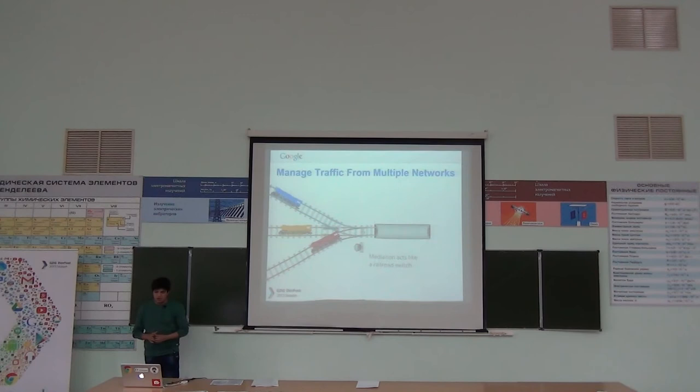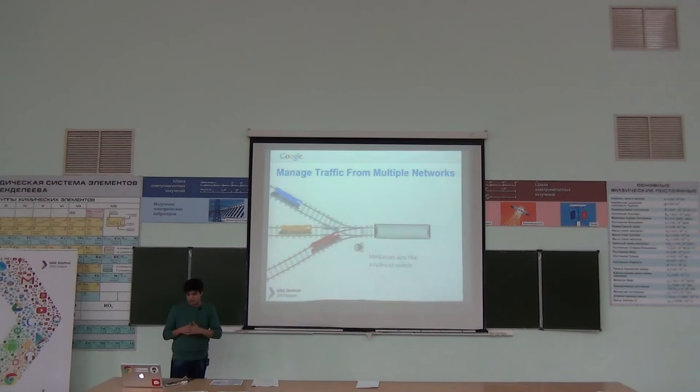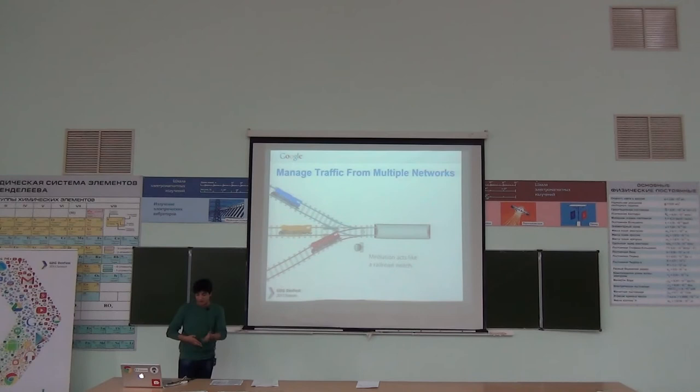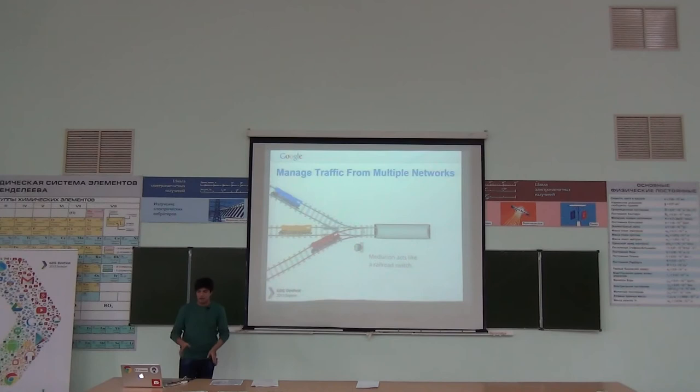The railroad switch here represents the eCPM value you have set. If you set an eCPM value, and the red train says its eCPM is higher, it is allowed. If the blue train says it's higher than yellow and higher than red, it is allowed and red is stopped. Only the maximum money-paying network is allowed through.